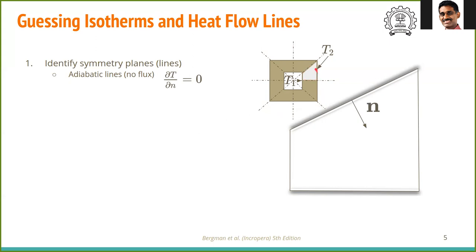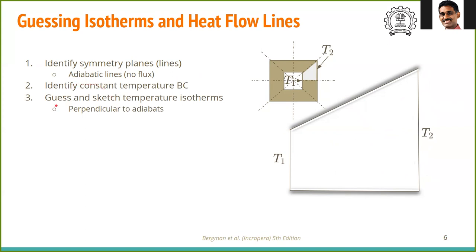We extract the small symmetric region and expand it. This shows the normal to the adiabatic surface — there is no temperature gradient along this line, no heat flux. The left side is maintained at temperature T1 and the right side at temperature T2. If we are able to guess the temperature profiles in this section, we have actually solved for the entire domain. We first identify the constant temperature lines, which are essentially the boundary conditions: here it is T1, and here it is T2.